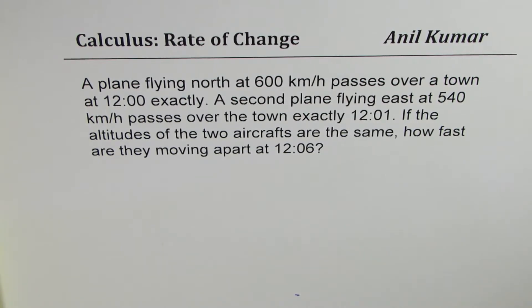The question here is: A plane flying north at 600 kilometers per hour passes over a town at 12:00 exactly. A second plane flying east at 540 kilometers per hour passes over the town exactly at 12:01. If the altitudes of the two aircrafts are the same, how fast are they moving apart at 12:06?